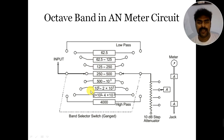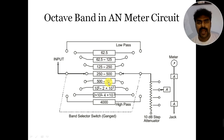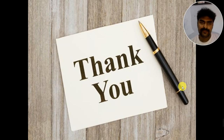This octave band circuit is taken from the book Wegmudra. One section is for the low pass and another is for the high pass. You can see that one value shown is 62.5 — this is a double octave. We can select any band, and on that basis, we can easily identify which type of frequency or audible noise is present and select the receiver accordingly. In the next video, I will discuss a numerical in which we can measure the audible noise. Thanks for watching.